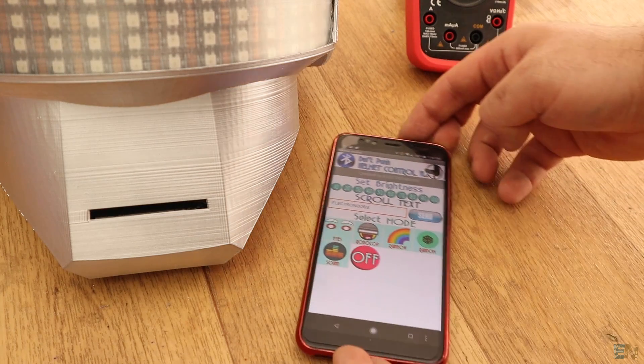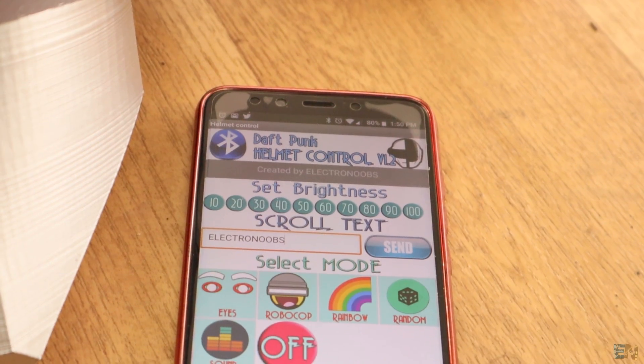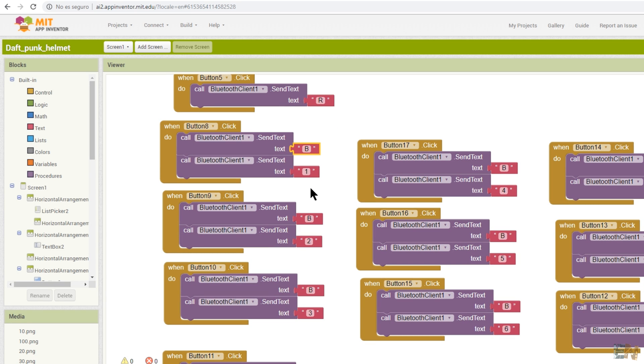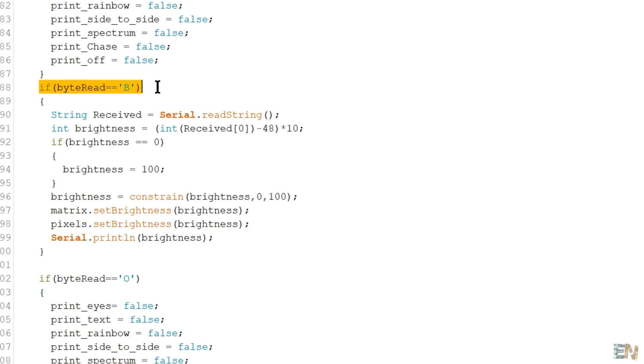On the other side, in App Inventor, I've created this app with a few buttons. Let me show you how this works in App Inventor. For example, if I insert a new brightness value, I first send the B character and then I send the brightness value. In the code, when I receive the B, I save the new brightness and then I set that value to the LEDs.